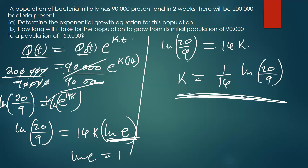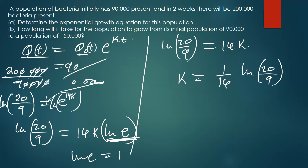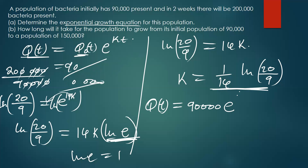If you are allowed to use a calculator, you can punch this in and find the final answer. That expression is just the value of k. To find the exponential growth equation, you write q(t) = 90,000 × e to the power kt. You can also write it as q₀ times e to the power kt, where q₀ is 90,000. Note: q(t) is just the equation — you are not substituting a specific value of t here.